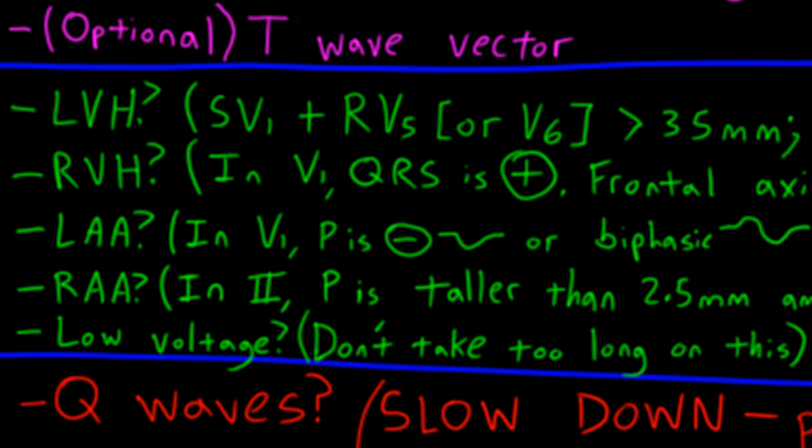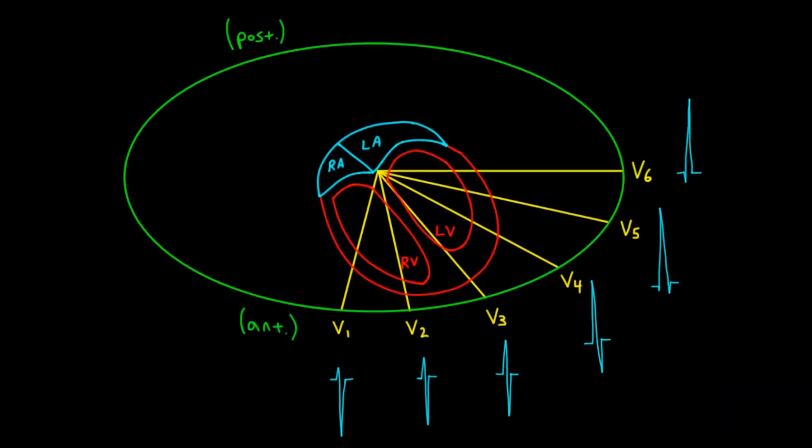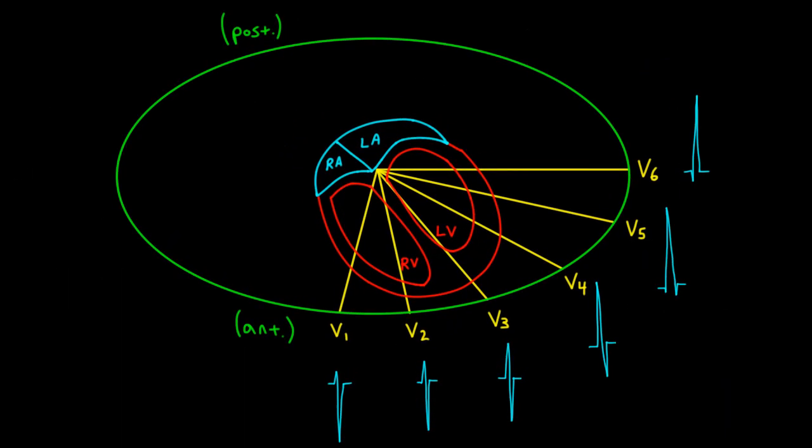I'll try to explain the rationale in a way that's easier to conceptualize. Let's look at this cross section through the chest. This diagram represents a simplified cross section, with the six precordial leads and the four chambers lined up at the same level. It should give you a general idea of the orientation of the chambers in the heart with respect to the precordial leads, and help you understand the basis for the diagnostic criteria we use to diagnose chamber enlargement.